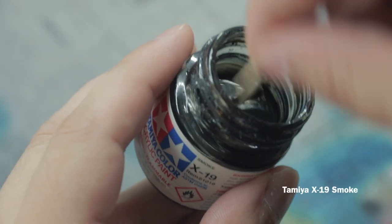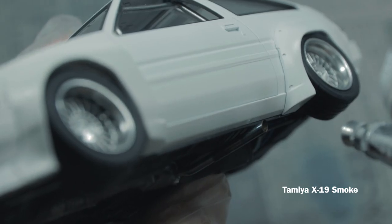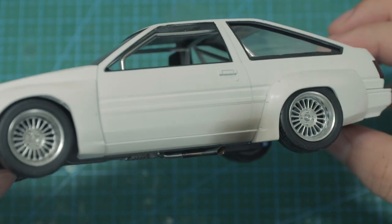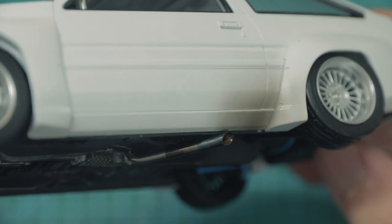A race car isn't a race car without any exhaust stains on the body. To create exhaust stains on the body, I spray a couple thin coats of Tamiya X19 smoke.